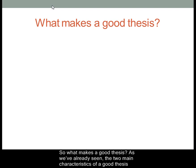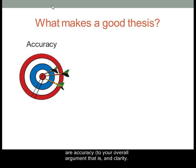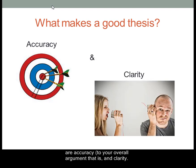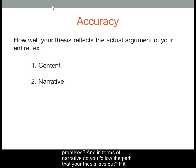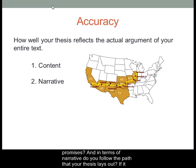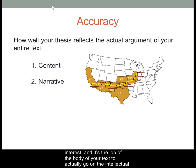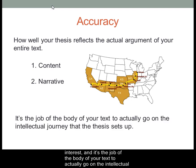What makes a good thesis? As we've already seen, the two main characteristics of a good thesis are accuracy to your overall argument and clarity. Accuracy refers to how well your thesis reflects the actual argument of your entire text, both in terms of content — do you actually make the argument that your thesis promises — and in terms of narrative — do you follow the path that your thesis lays out. Think of your thesis like a roadmap through your text that lays out the main points of interest, and it's the job of the body of your text to actually go on the intellectual journey that the thesis sets up.